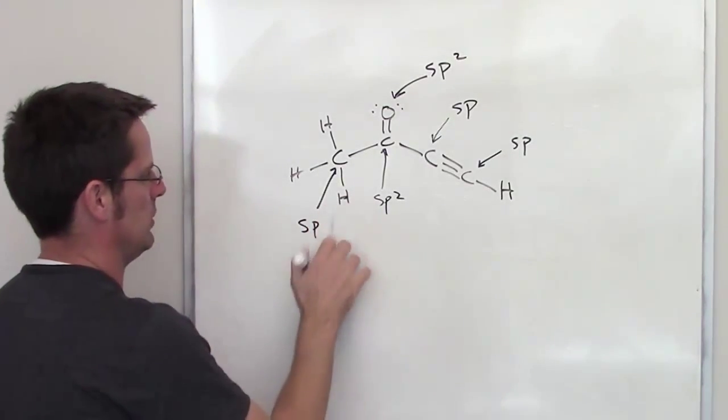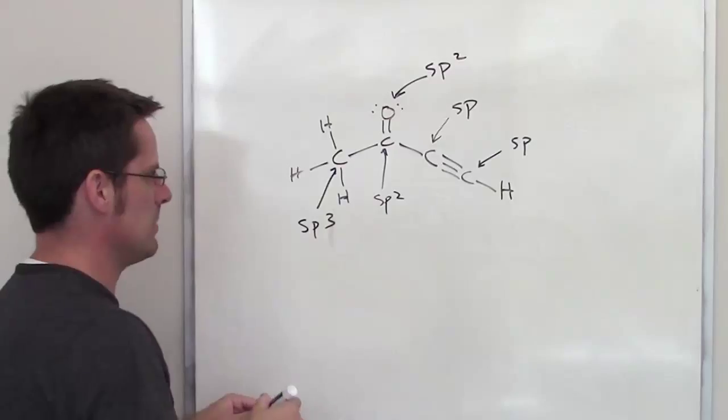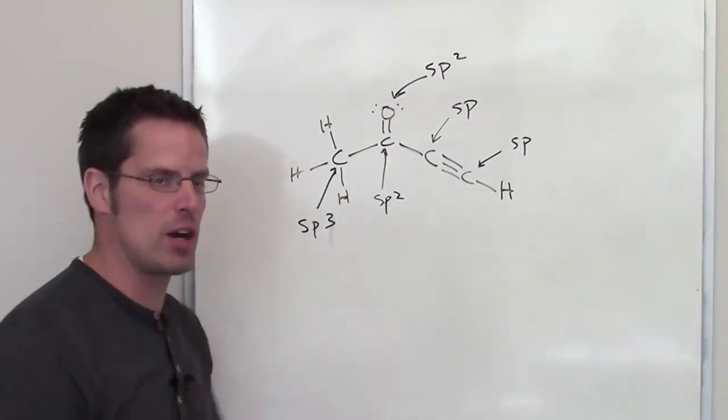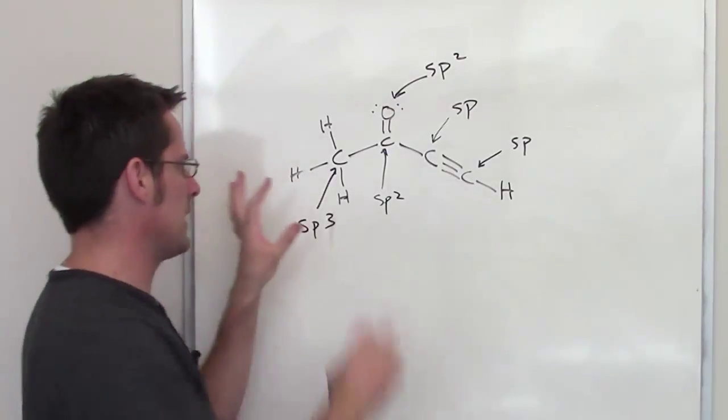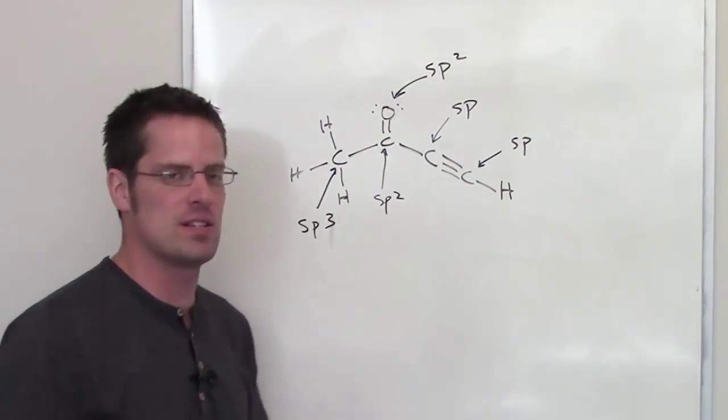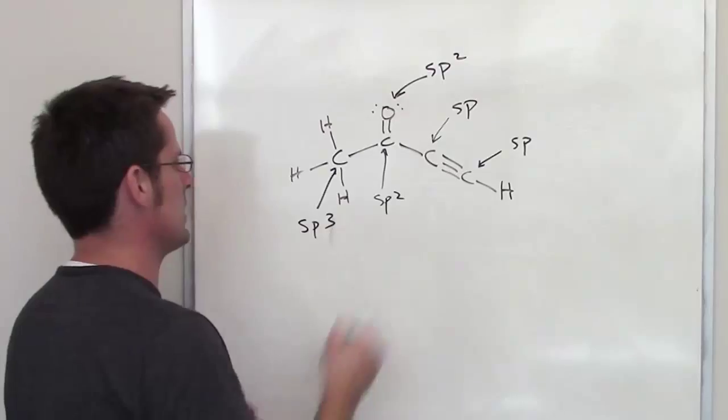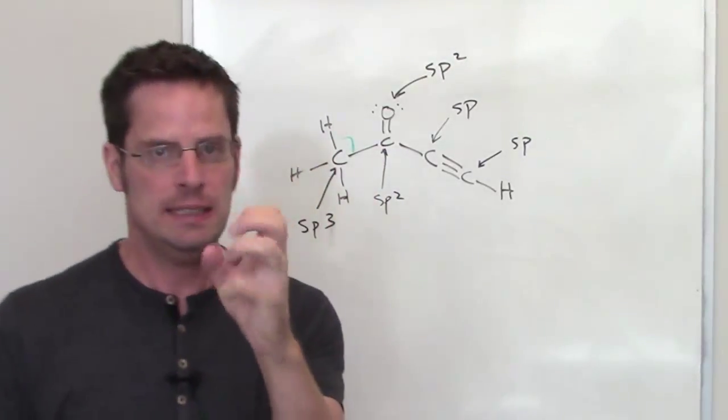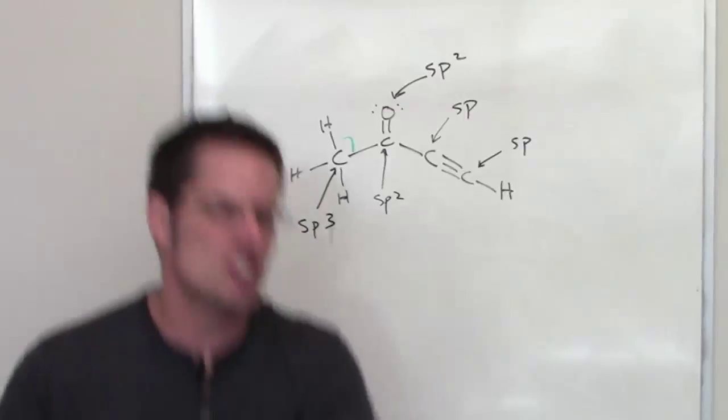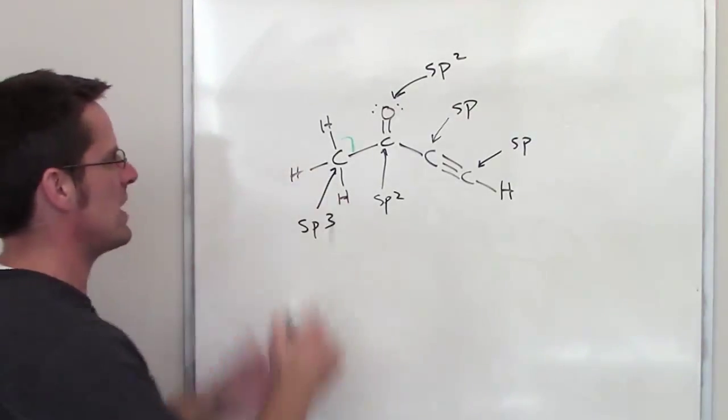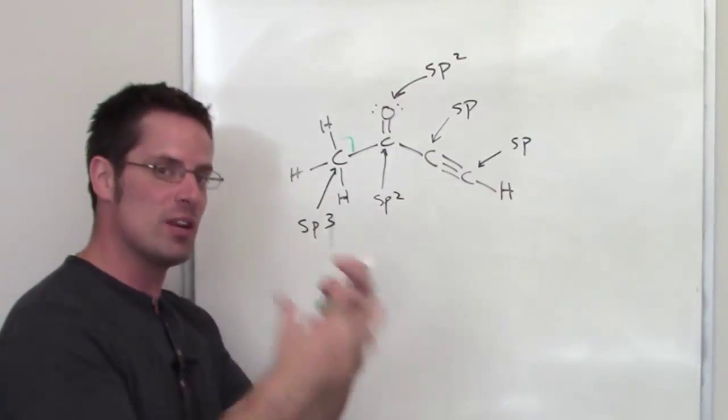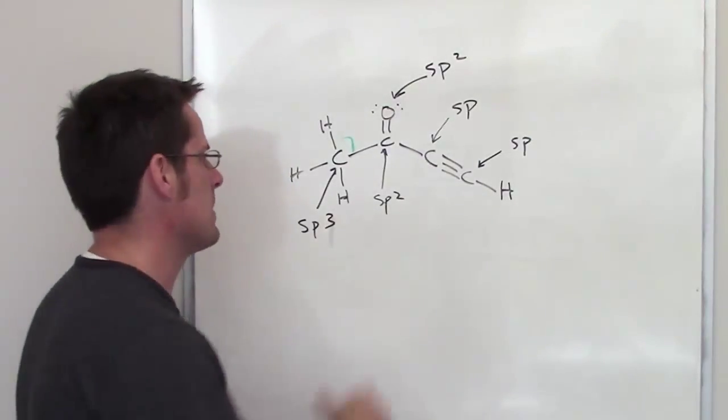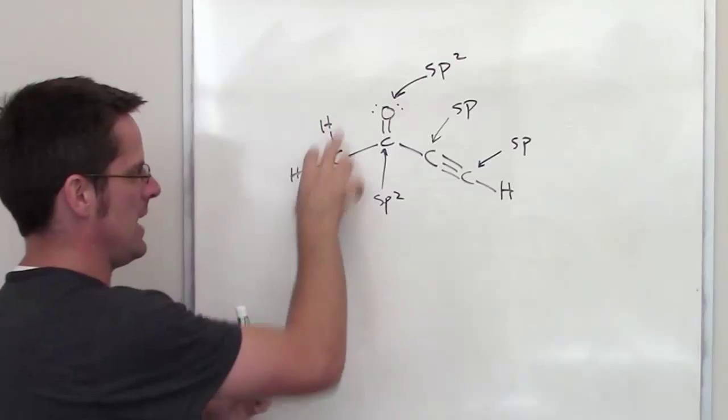Even though you might look at the way it's drawn on paper and say that looks like a 90 degree bond angle, please, for the love of all that is holy, don't make that mistake. It's not a 90 degree bond angle. We just drew it that way on paper because the board is two-dimensional. In real life we're dealing in 3D. The bond angle around any center that's sp3 hybridized is going to ideally be around 109.5 degrees.